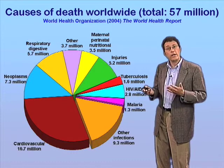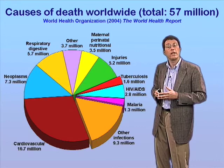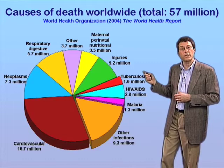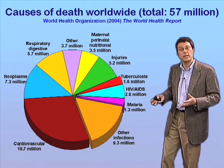According to the World Health Organization, of the 57 million or so people who die every year of various causes — all causes combined worldwide — about one in four individuals die of one or another infectious disease. Among infectious diseases, the big three are tuberculosis, HIV-AIDS, and malaria, which together account for something like six to seven million deaths every year.